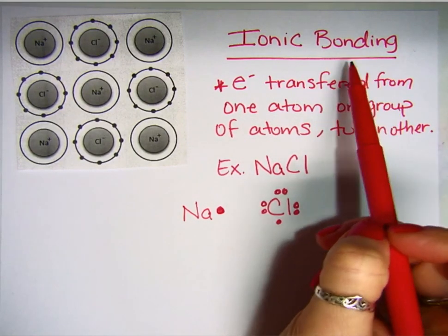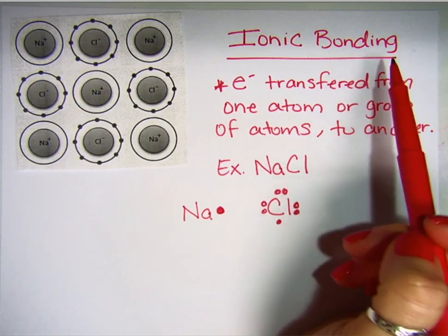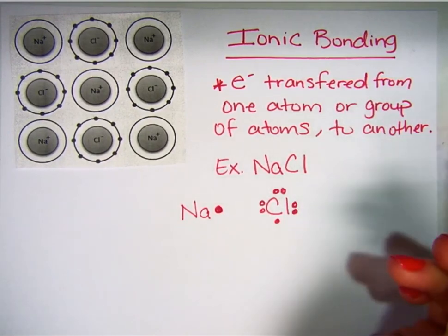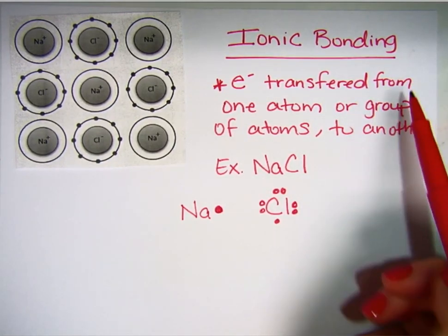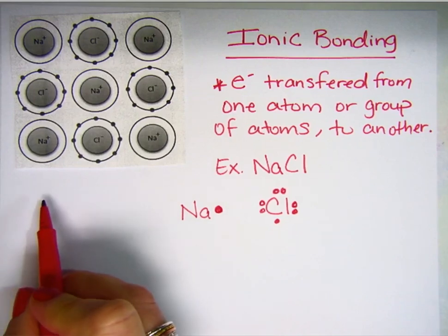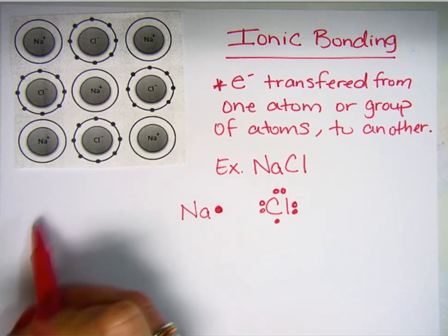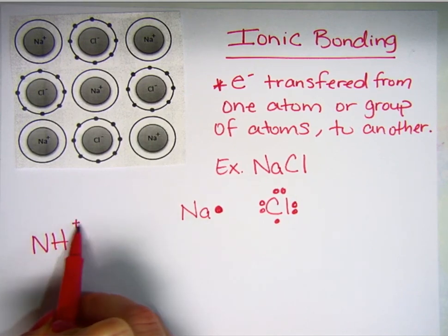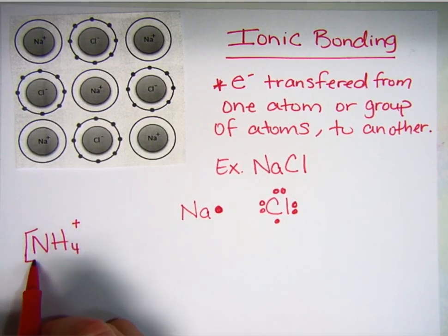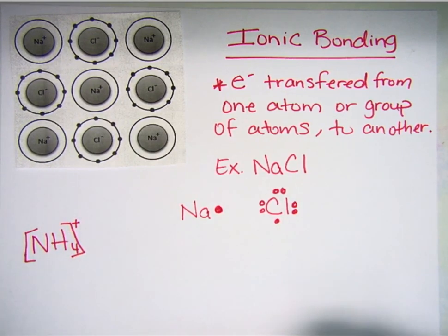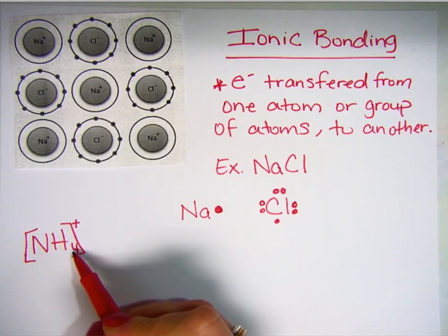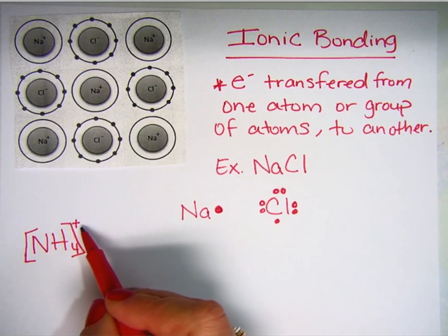Ionic bonding occurs between usually a metal and a non-metal, or metals and non-metals. You can also have polyatomic ions included in that, where you have a polyatomic ion like NH4+. That plus applies to everything here in the brackets, meaning this nitrogen and hydrogen group, so all five of these particles are collectively sharing this positive charge.